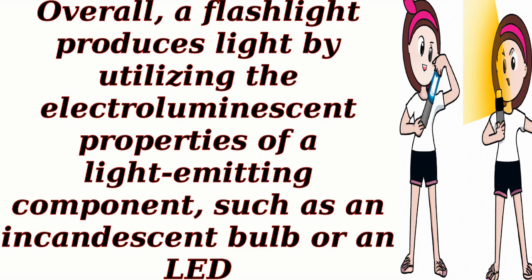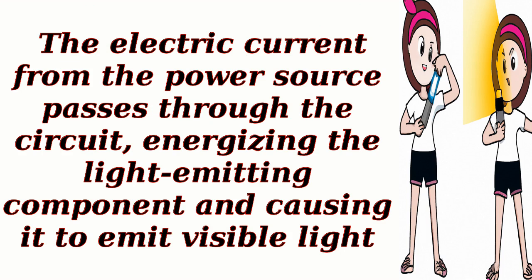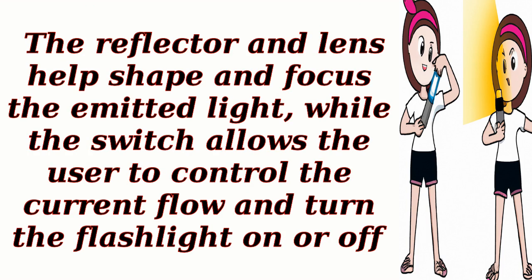Overall, a flashlight produces light by utilizing the electroluminescent properties of a light-emitting component, such as an incandescent bulb or an LED. The electric current from the power source passes through the circuit, energizing the light-emitting component and causing it to emit visible light. The reflector and lens help shape and focus the emitted light, while the switch allows the user to control the current flow and turn the flashlight on or off.